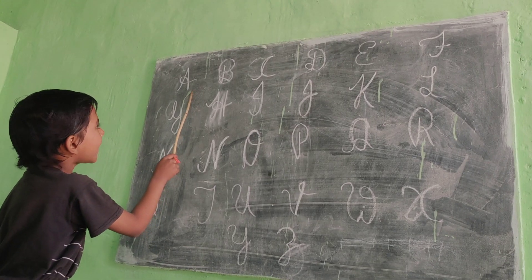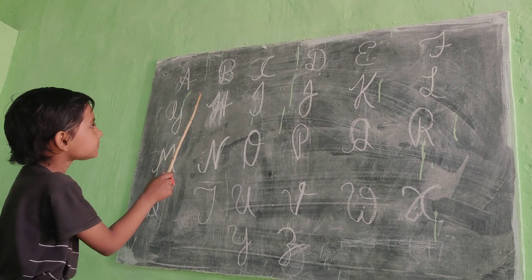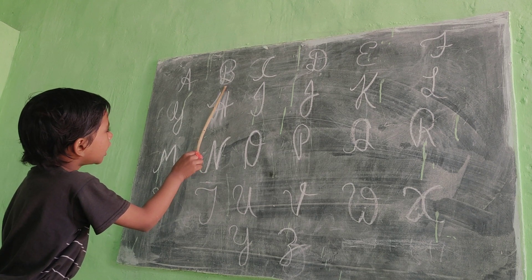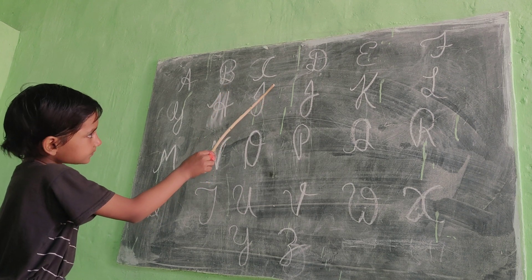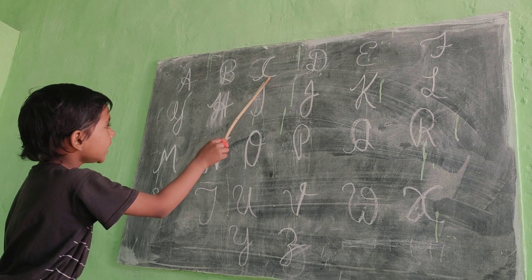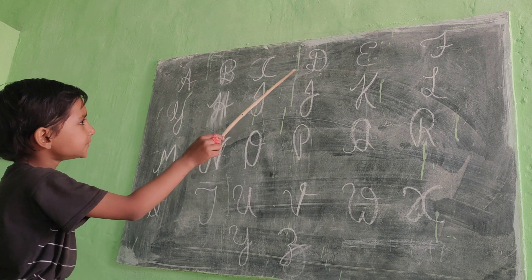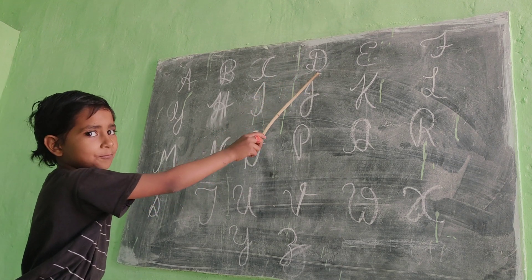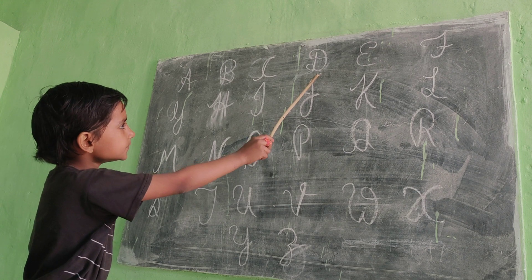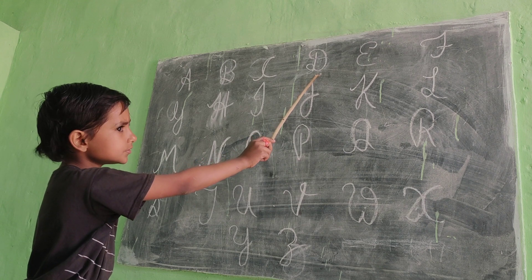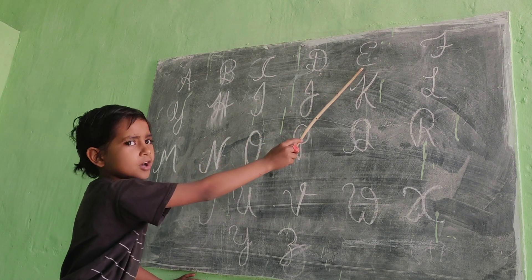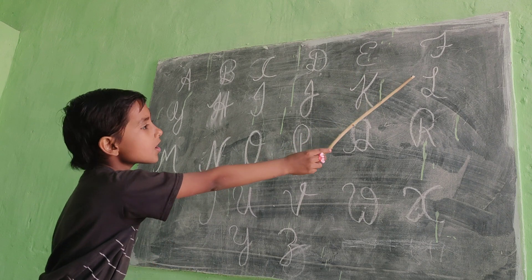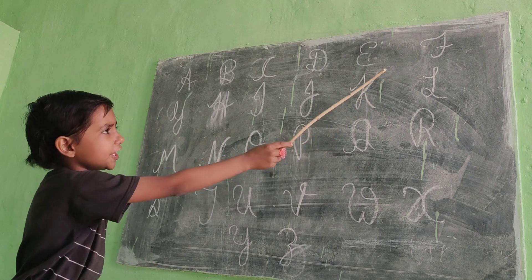A for apple, D for ball, C for cat, D for dog, E for elephant, F for fish.